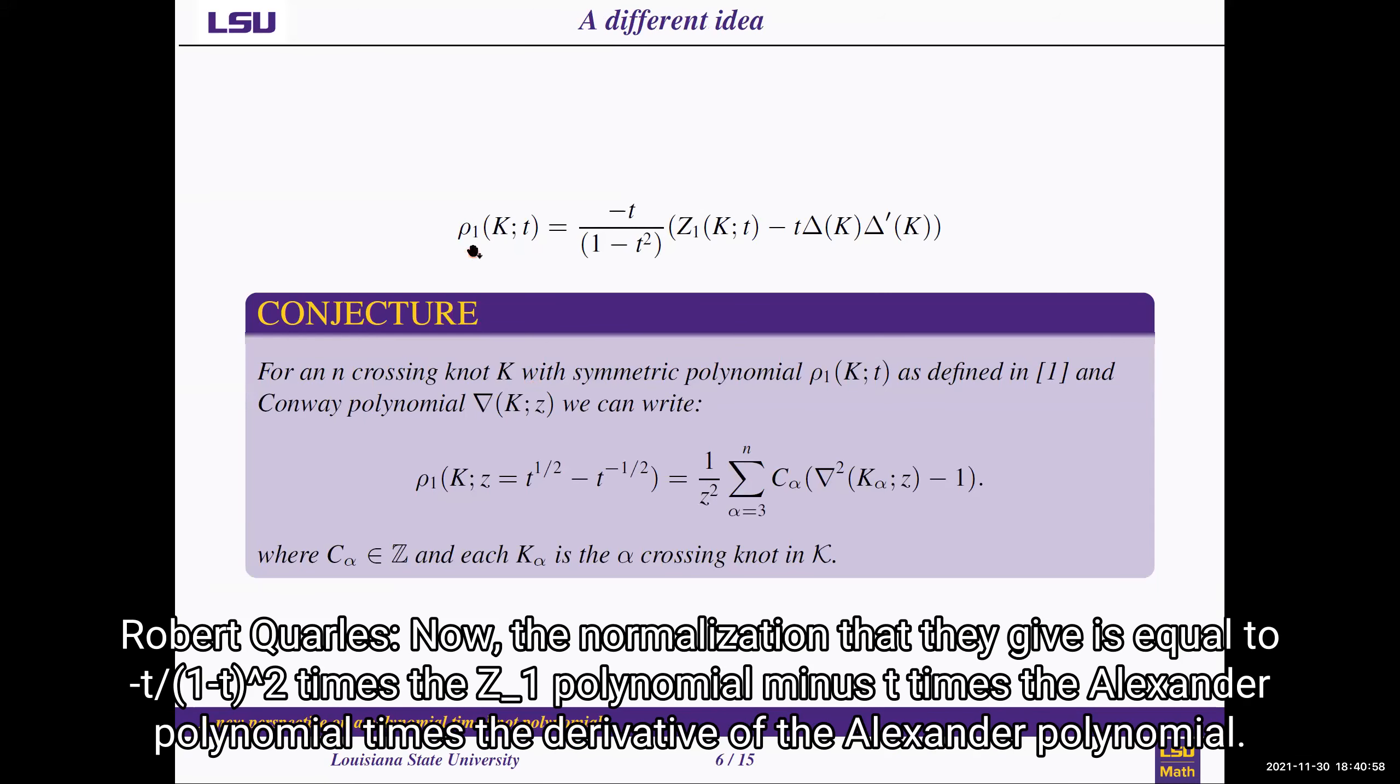Now the normalization that they give is equal to minus T over (1 minus T squared) times the Z_1 polynomial minus T times the Alexander polynomial times the derivative of the Alexander polynomial.